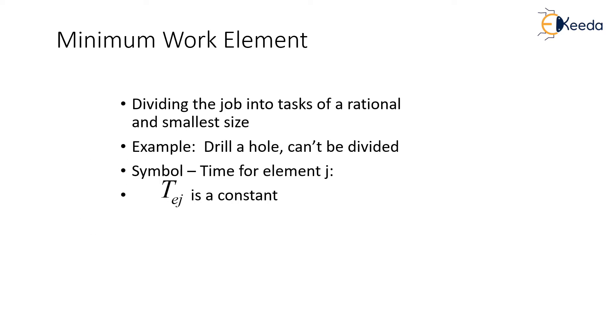The minimum work element is defined as dividing the job into tasks of a rational and smallest size. For example, drill a hole cannot be divided, and the symbol for each element is represented by j. Hence, we represent the time as T_ej, which is constant.